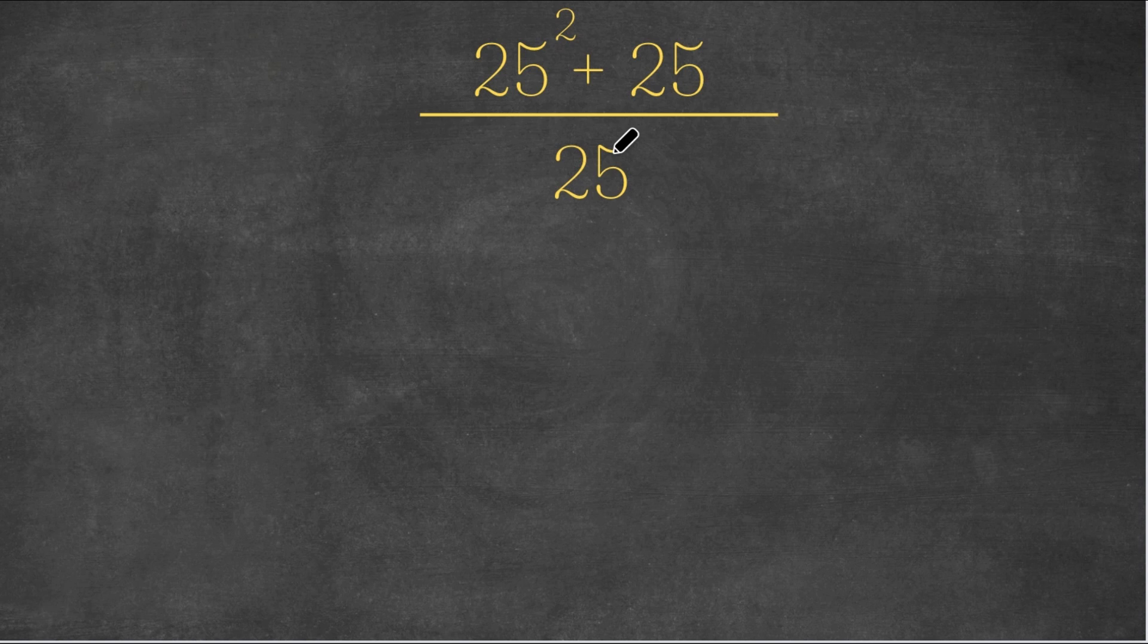So for the first method, as you can see, our numerator has 25 squared plus 25. What I'm going to do is factor out 25 from our numerator.